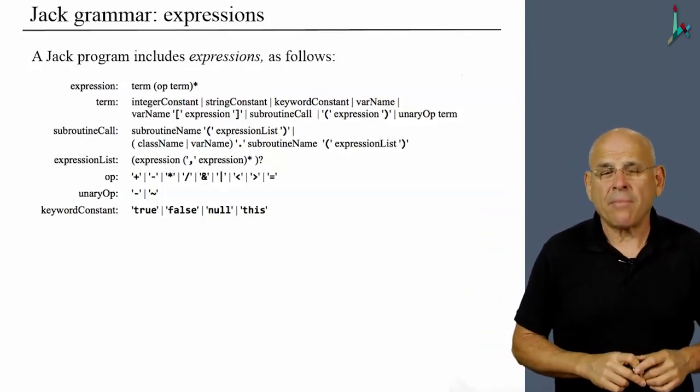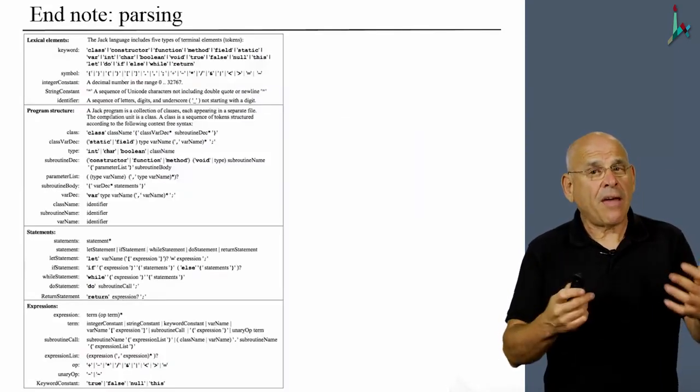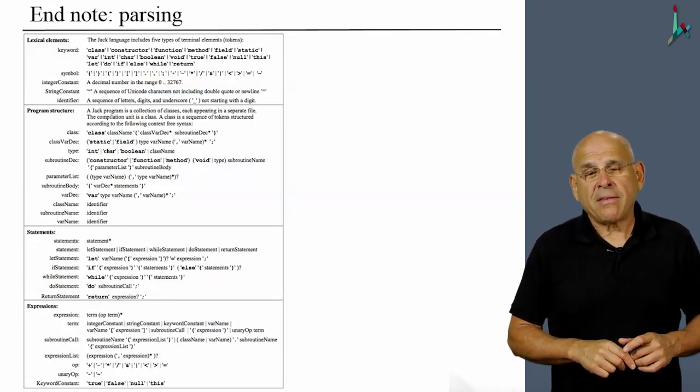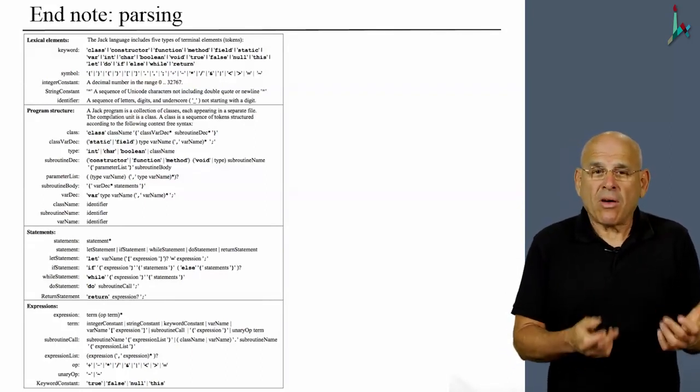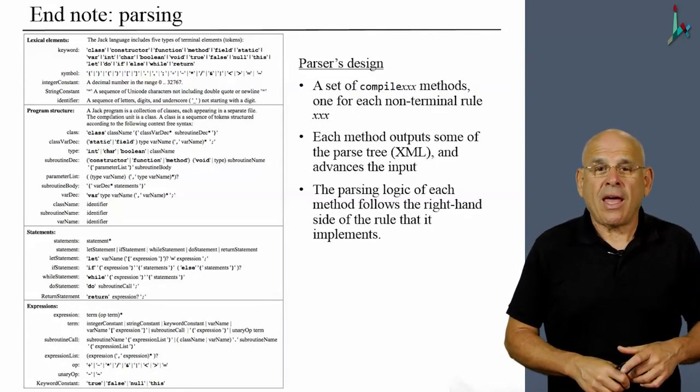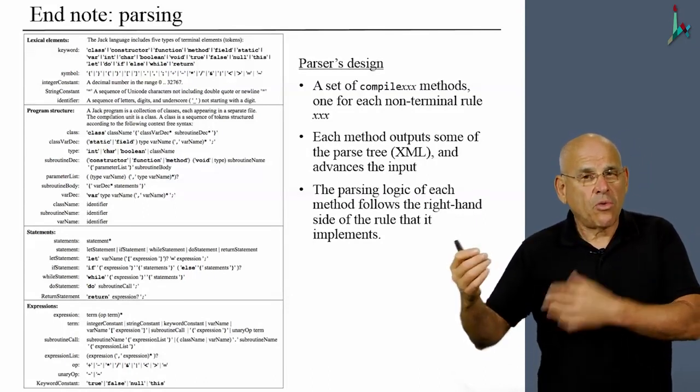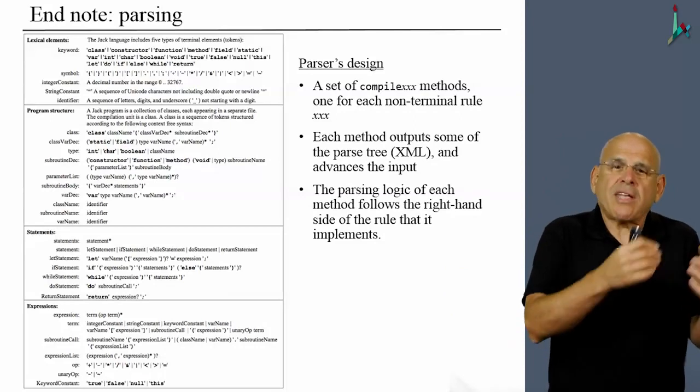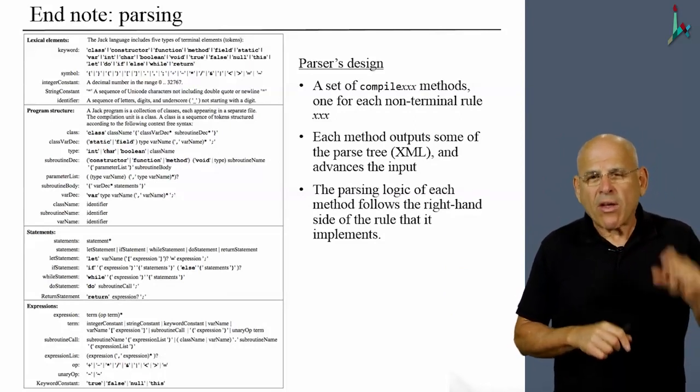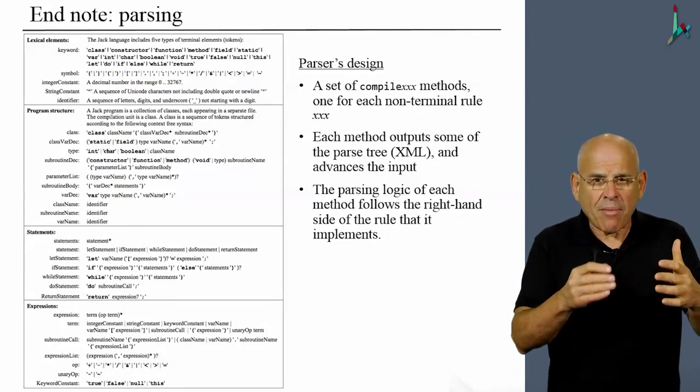And I'd like to sort of summarize what we did so far. And then I'll go back to the handling of expressions. So to recap, we gave the entire Jack grammar. And we need this grammar because this is the recipe according to which we're going to write our parser.